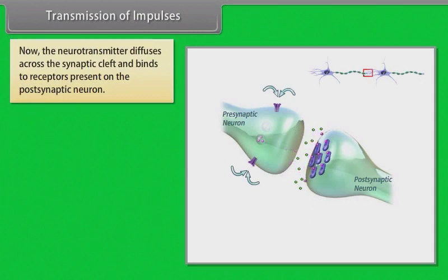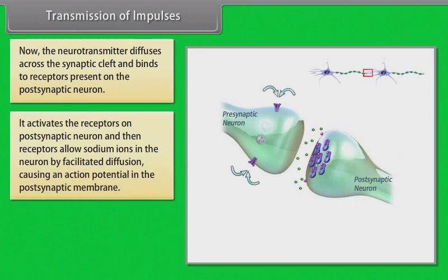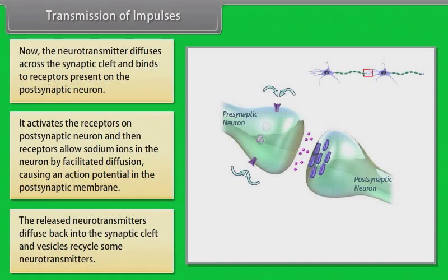The neurotransmitter diffuses across the synaptic cleft and binds to receptors on the post-synaptic neuron. It activates those receptors, which allow sodium ions into the neuron by facilitated diffusion, causing an action potential in the post-synaptic membrane. The released neurotransmitters then diffuse back into the synaptic cleft and vesicles recycle some neurotransmitters.